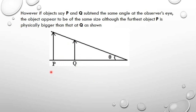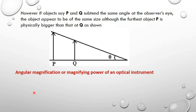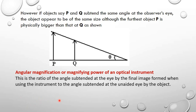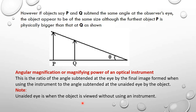Let's look at angular magnification or magnifying power of an optical instrument. This is the ratio of the angle subtended at the eye by the final image formed when using the optical instrument, to the angle subtended at the unaided eye by the object. The unaided eye means the object is viewed without using any instrument.